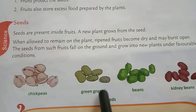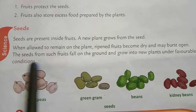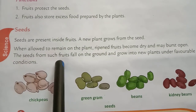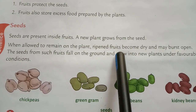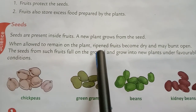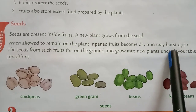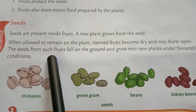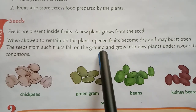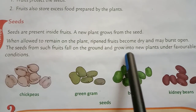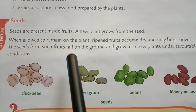Examples include chickpeas, green gram, beans and kidney beans. When fruits ripen, they become dry and burst, causing seeds to fall to the ground, where they grow into new plants under favorable conditions.